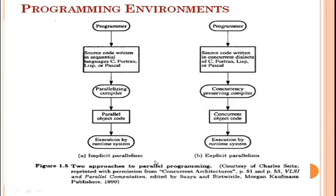Now, programming environments. The programmability of a computer depends on the programming environment provided to the user — either a sequential environment or a parallel environment. Conventional uniprocessor computers are programmed in a sequential environment where instructions are executed one after the other. In a parallel environment, when using parallel computers, parallelism is automatically exploited.